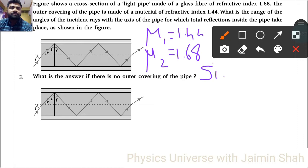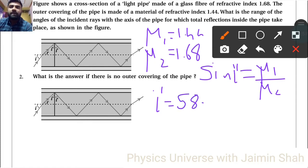So sine i' formula using Snell's law: μ₁ upon μ₂. So i' is equal to sine inverse of 1.44 upon 1.68, and that answer is 58.99°. So that is the i'.